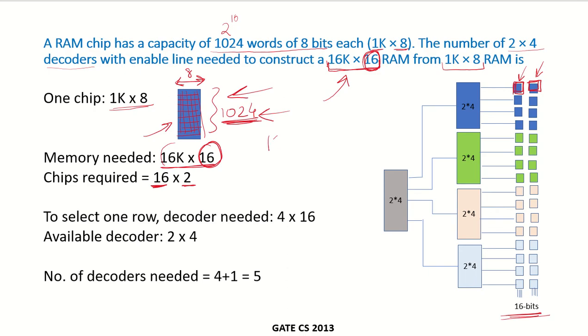Even otherwise you can figure out that 16K by 16 divided by 1K into 8, this gives you 16K into, so 16 into 2 chips. There are 16 rows like this and each row is having 2 chips so that we can get 16 bits.